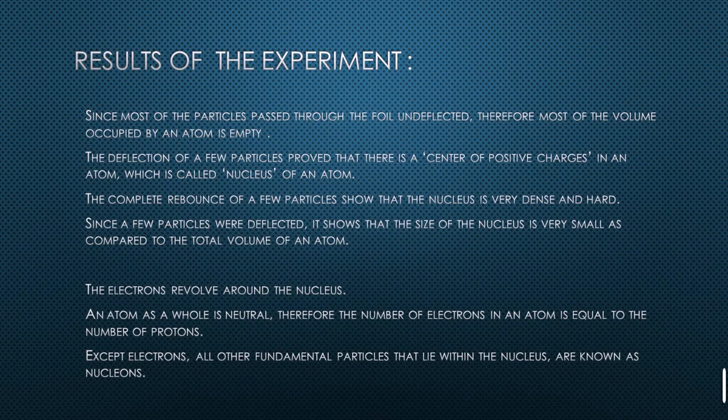The atom as a whole is neutral; therefore, the number of electrons in an atom is equal to the number of protons. Except for electrons, all other fundamental particles lying in the nucleus are known as nucleons. This is the basic definition of nucleons. Electrons revolve around the nucleus, while protons and neutrons present in the nucleus are called nucleons.